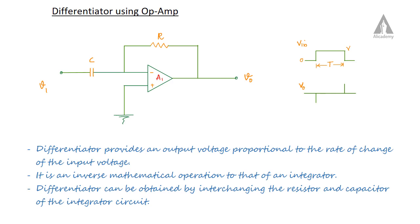We are going to discuss the differentiator using an operational amplifier. The only difference between an integrator and a differentiator is that the position of the capacitor and the resistor is interchanged. The capacitor is now at the input terminal and the feedback circuit has resistor R. We connect the input voltage here and take the output voltage from here.